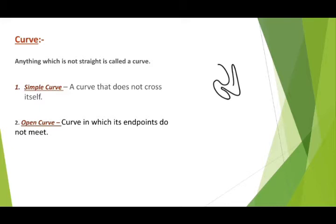ऐसी figure जो अपने आप खुद में cross नहीं होती। Second is the open curve — a curve in which its end points do not meet. ऐसी curve जिसमें दोनों end points एक दूसरे को मिलते नहीं हैं, उसको हम open curve बोलते हैं।